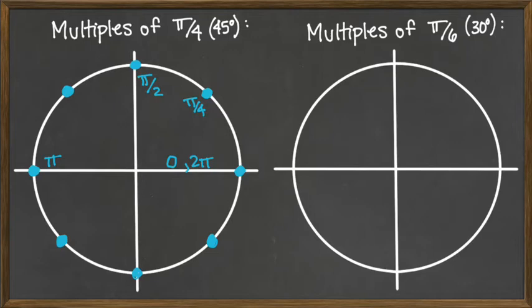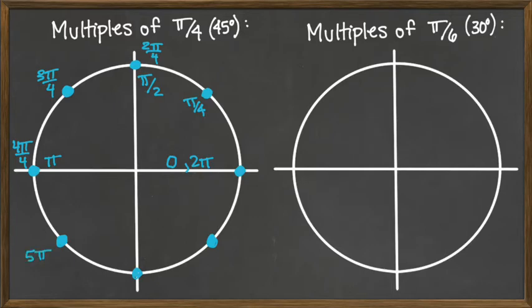Rather than converting each angle individually, it's far easier to just count. It amounts to counting and then reducing. We start at 0, and our first point is 1π/4. The next is 2π/4, then 3π/4, 4π/4, 5π/4, 6π/4, 7π/4, and 8π/4. If you can count 1 to 8 and then reduce, you have all the values you want.